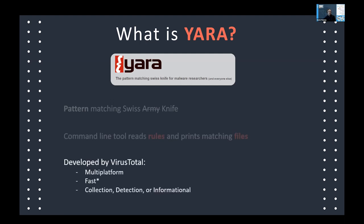YARA is developed by VirusTotal — Victor Alvarez worked for Chronicle, now owned by Google. It is multi-platform: Windows, Mac, and Linux. It's fast, though with an asterisk: YARA is somewhat slower than Suricata or Snort, but in the past five years YARA has had huge performance gains with each release. Some speed is also dependent on the rule author — certain logic in your rule will dictate performance cost. If your rule is performing slowly, it could be that the rule logic itself is not optimized.